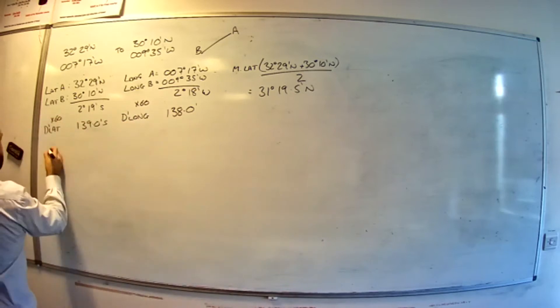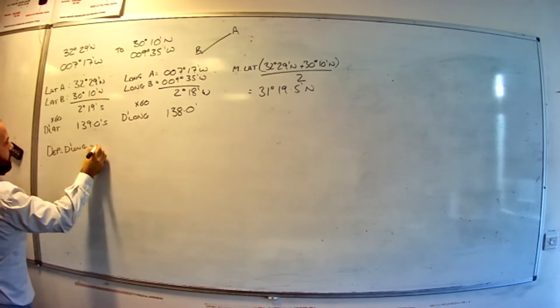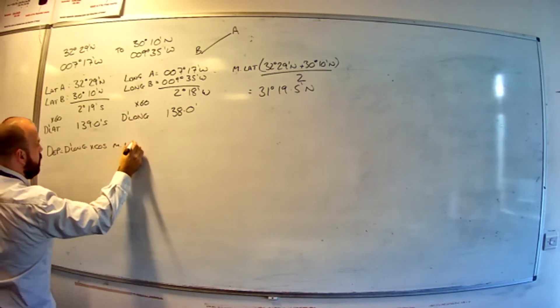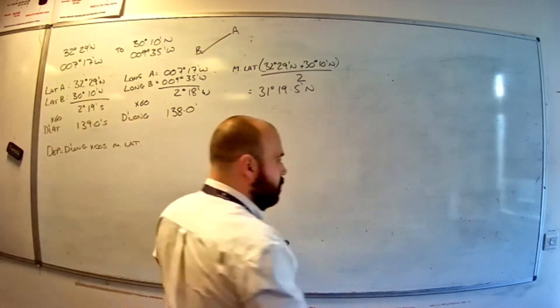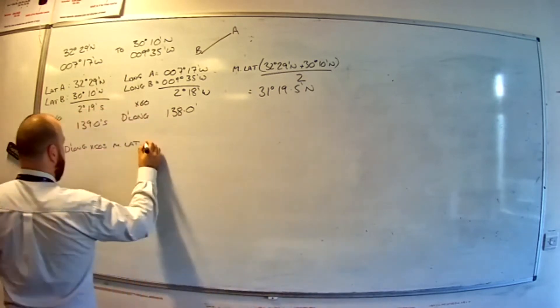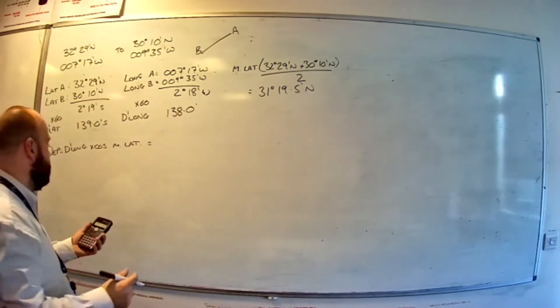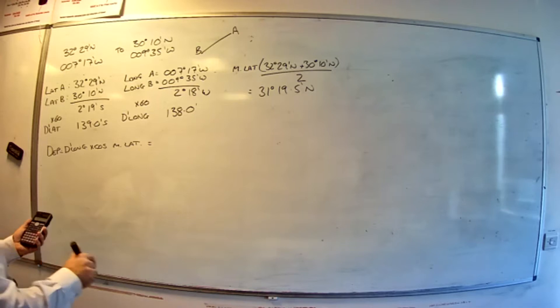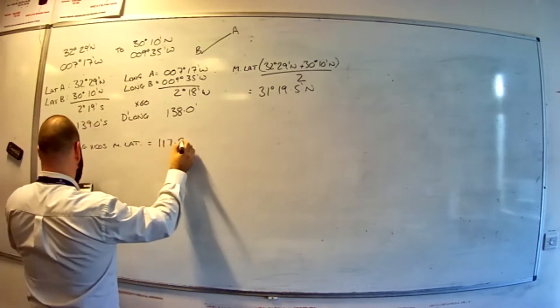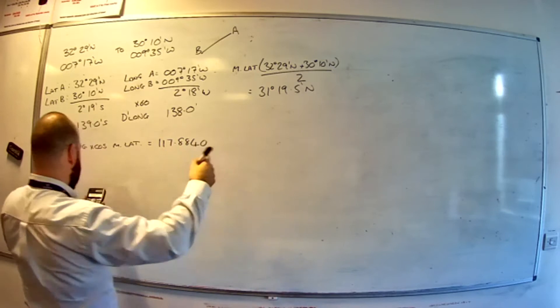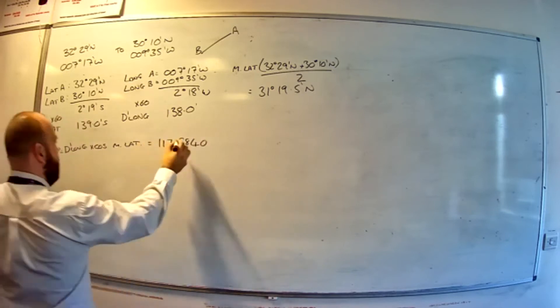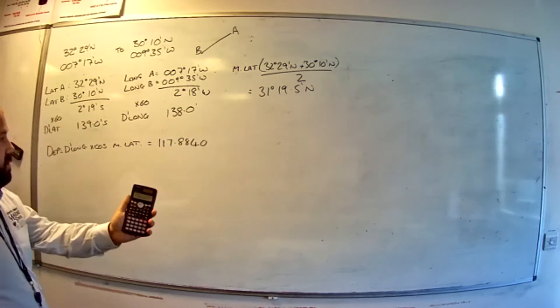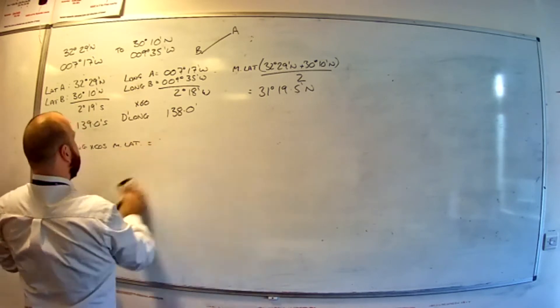Right. Now then, departure equals DLong times cos mean lat. We're just converting DLong into miles here, so we're not using the convention of just one decimal place for distance. What we're going to do is use at least four decimal places. Personally, I like to keep the whole answer on every calculator. So DLong is 138 times the cosine of 31 degrees 19.5 minutes. Gives us a departure of 117.8840251 if you're wanting to keep going. At least four decimal places is what you really need. Like I say, I personally just keep it on my screen because now what I can do...